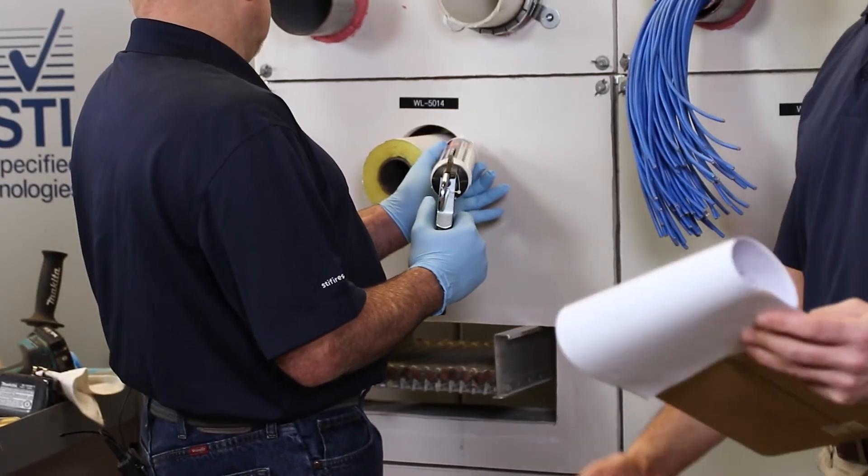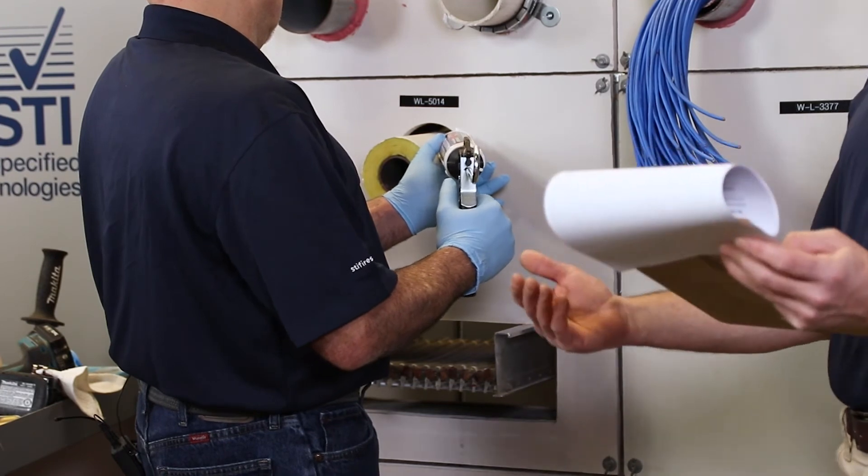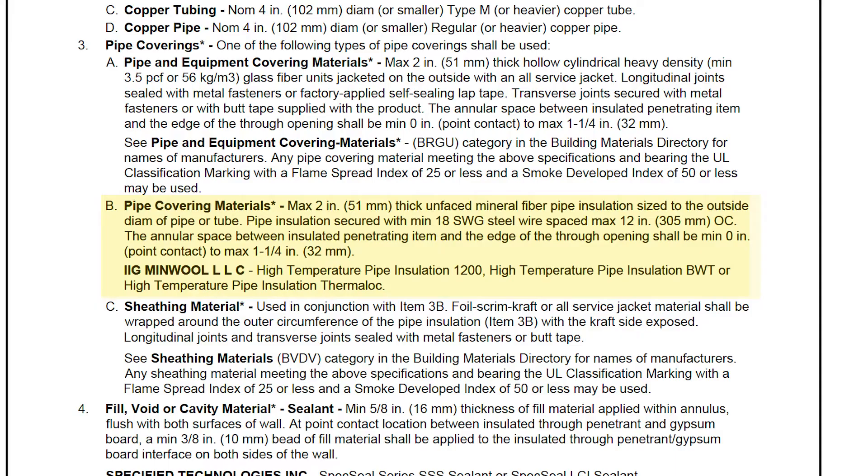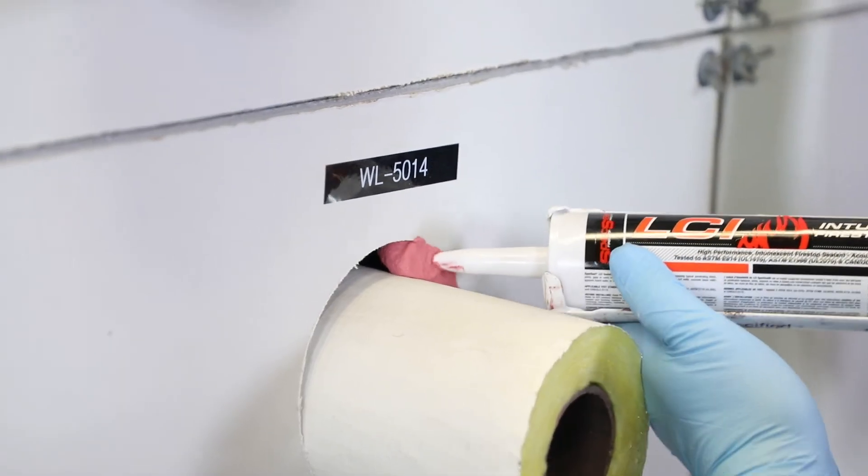We'll check the pipe coverings here. Obviously you always need to check everything within a system. This pipe covering is the glass fiber insulation. We're allowed up to two inches. This is a caulk only system.